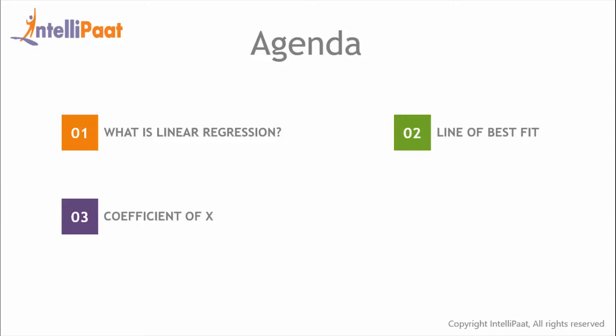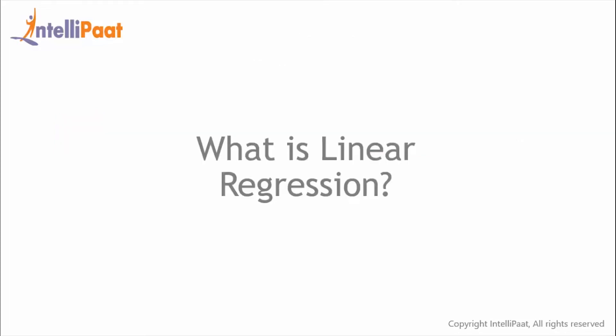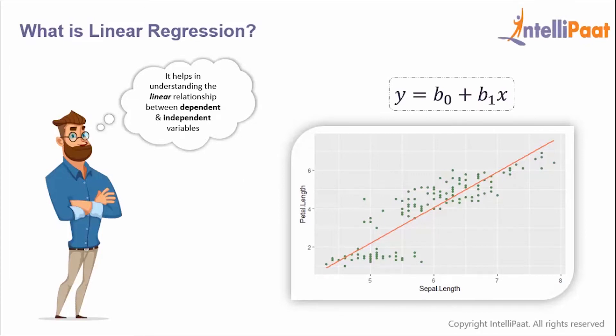So let's get started. Linear regression is a predictive modeling technique which is used whenever there is a linear relationship between the independent and dependent variables, and it is used in estimating exactly how much of Y will change when X changes by a certain amount.